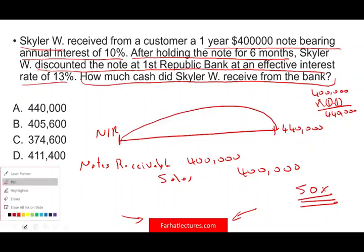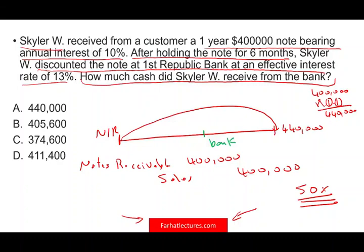Obviously, Skyler could not wait — Skyler wanted to get the money sooner. So six months later, Skyler went to the bank and told them: 'We need money. We have this note. You can collect the note, but we need some money now.' The bank wants to earn interest as well — the bank wants to earn 13% interest on whatever money they give you.